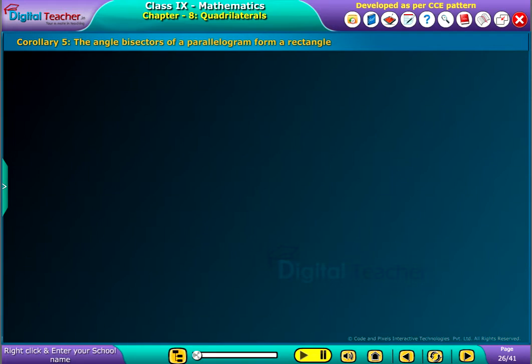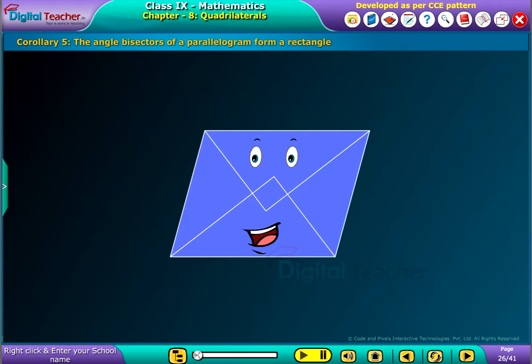Welcome to the chapter. Now, let us see the corollary: the angle bisectors of a parallelogram form a rectangle.